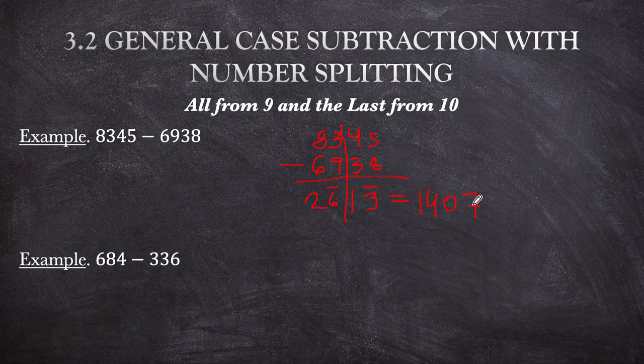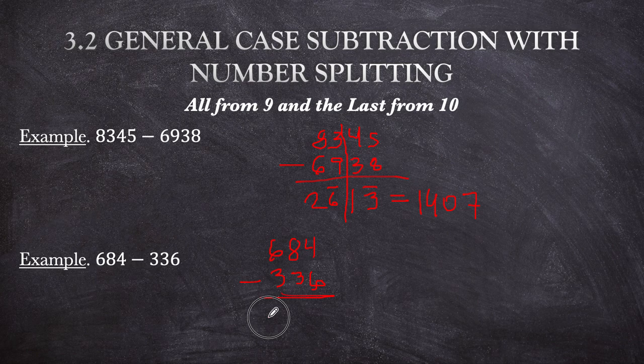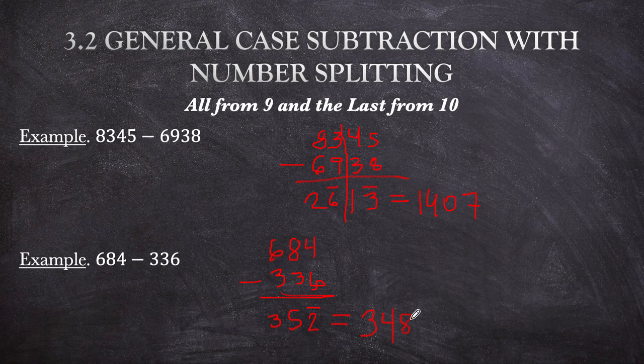Last example: 684 minus 336. So: 6 minus 3 is 3; 8 minus 3 is 5; 4 minus 6 is bar 2. Converting: subtract 1 from that — becomes 3, 4. Then last from 10 gives 8. Answer: 348.